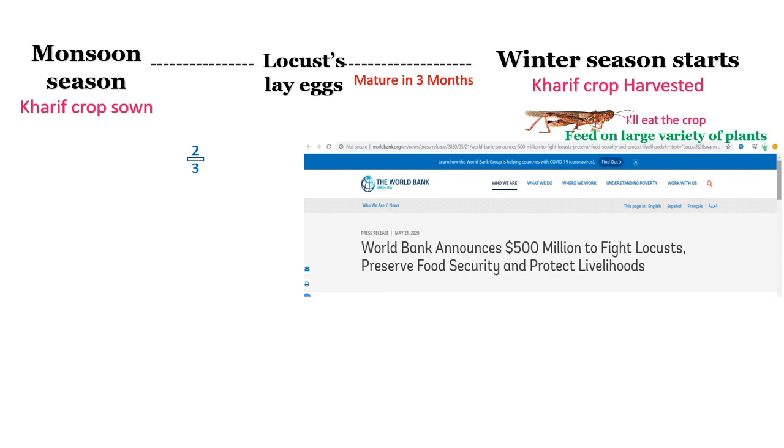The locust mainly feeds on a large variety of plants, especially green-colored leaves.